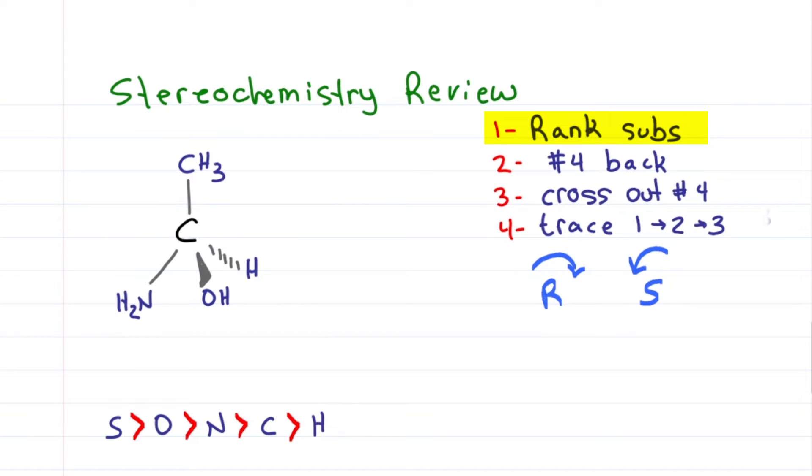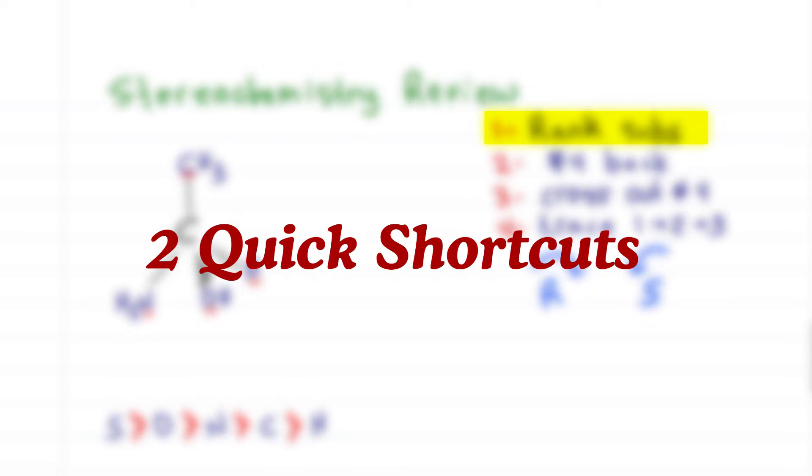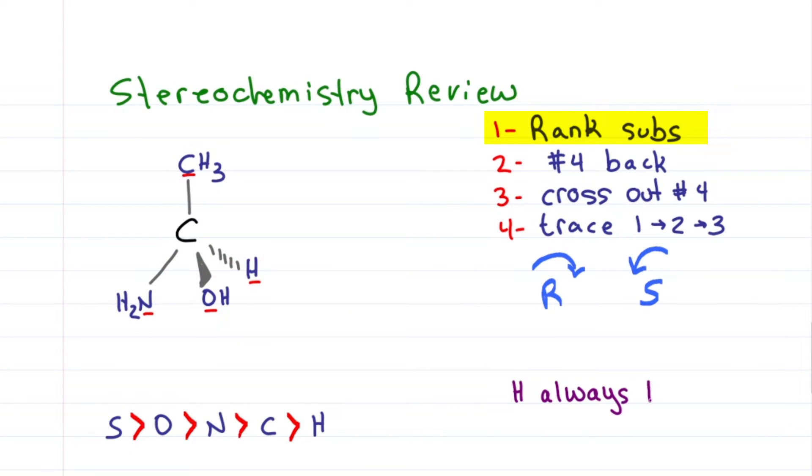Back to our molecule, we start by ranking substituents. We have C, H, O, N. Two quick shortcuts to remember: one, hydrogen is always number four, and two, methyl in the presence of a hydrogen is always number three. That leaves O versus N, oxygen outranks nitrogen giving me one and two. Make sure number four is in the back, it is. Cross out number four, trace an arc from one to two to three, and since the top of the arc goes to the right it's R.